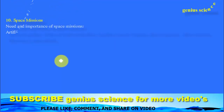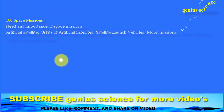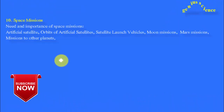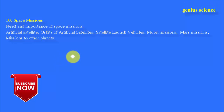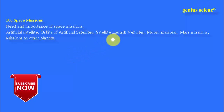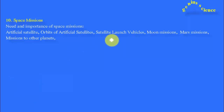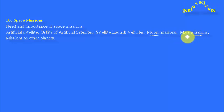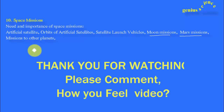The 10th and last chapter is Space Mission. Important points include the needs and importance of space missions, artificial satellites, orbits of artificial satellites which depend on the height of the satellite from the surface of earth, satellite launch vehicles such as PSLV — the Polar Satellite Launch Vehicle — moon missions, Mars missions, and missions to other planets.